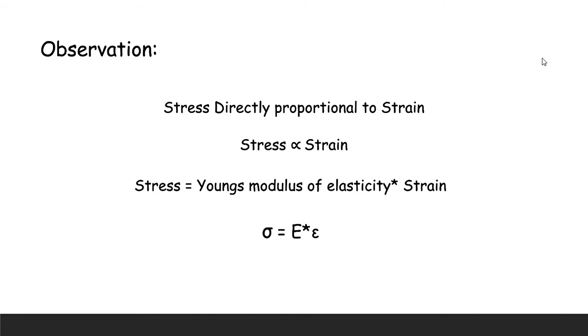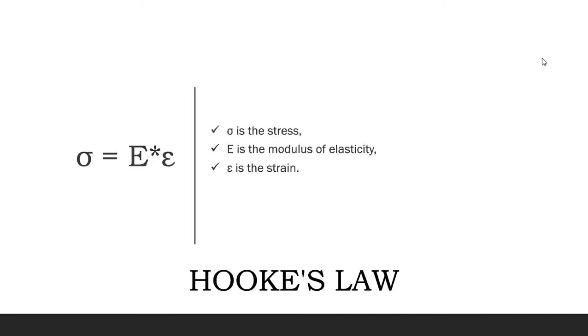Stress is equal to Young's modulus of elasticity times strain. Young's modulus of elasticity E is known as a proportionality constant. This is given as sigma equals E times epsilon, where sigma is stress, E is the modulus of elasticity, and epsilon is strain.